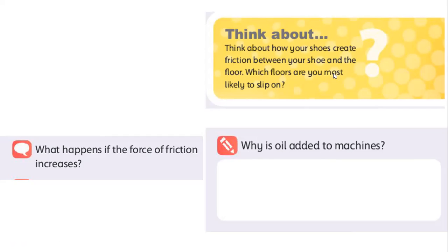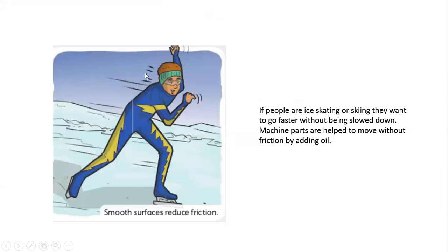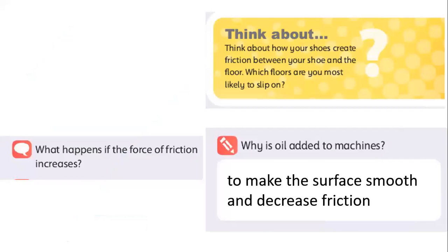Let me repeat one more time. Let's turn back carefully. Machine parts - it means car or bicycle. If we add oil, what will happen? The engine will move, it will produce energy without friction and will move faster. When we add oil, the surface becomes smooth with oil and it reduces friction, meaning decreased friction - because of this it moves faster.